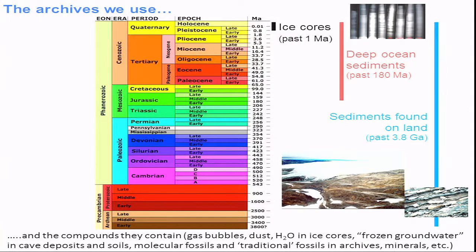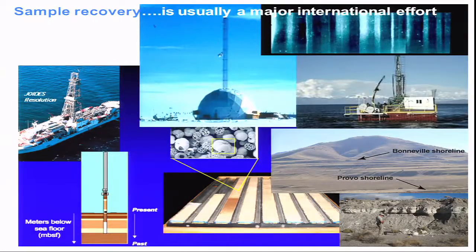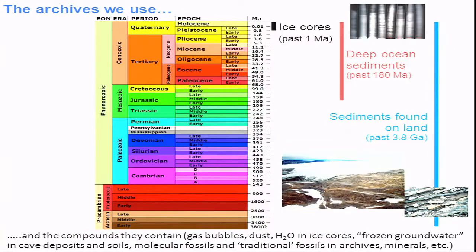Because of plate tectonics, which destroys ocean crust older than about 200 million years, we can't go back much further than the last 200 million years. Further back in time, we're really reliant on looking at sediments found on land that give us discontinuous pictures into climate variability. For the Pleistocene and Holocene, we can look at all three types of archives and specifically the compounds they contain. In the case of ice cores, we can look at gas bubbles, mineral dust, and the water that comprises the ice itself — all of which can tell us something about the environment they formed in.